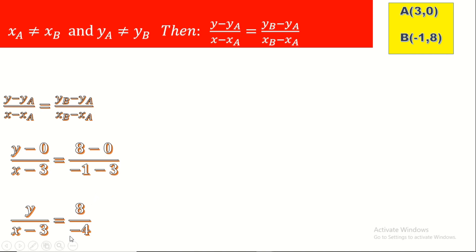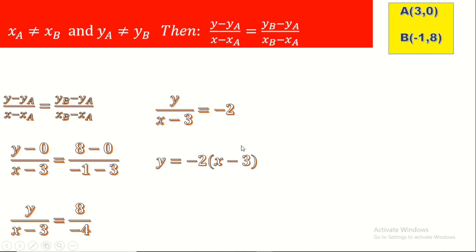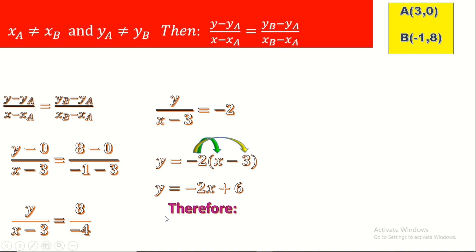Replacing the values: y/( x - 3) = 8/(-1 - 3) = 8/(-4) = -2. So y/(x - 3) = -2. Moving (x - 3) to the other side gives y = -2(x - 3). Expanding: y = -2x + 6. Therefore the equation of straight line AB is y = -2x + 6.